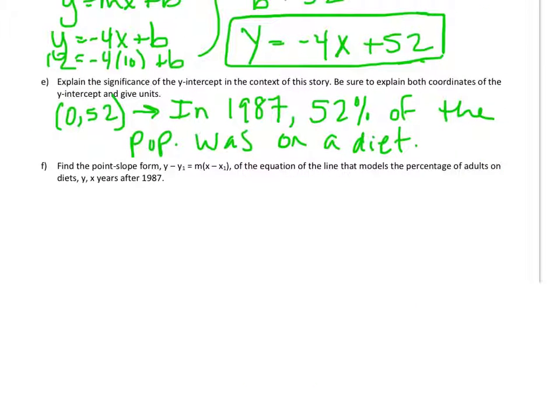Okay, so now I want to find the point slope form of the equation of the line that models the percentage of adults on diets, y, x years after 1987. All right, so I've written the point slope form down here. All I need to do is replace the m with a negative 4 because I already calculated that, and x1 and y1 with any two points on the line. So I'm going to use 10, 12 again.